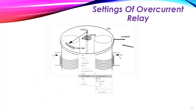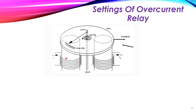As you remember, the induction disk consists of two poles, each taking currents i1 and i2, which produce two fluxes phi1 and phi2. The angle between these two currents produces an angle alpha between the two fluxes, which leads to the production of torque inside the induction disk.